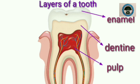Pulp. There is a soft pulp inside the dentine. It consists of nerves and blood vessels. The pulp helps in two ways: it provides the tooth with nourishment, and it sends signals to the brain. For example, when we have a toothache, the pain is sensed in the pulp.